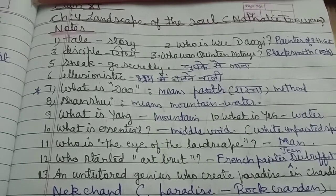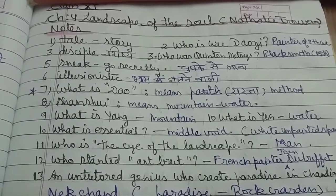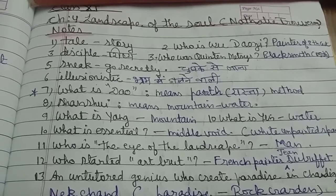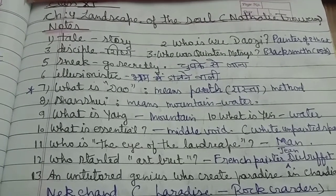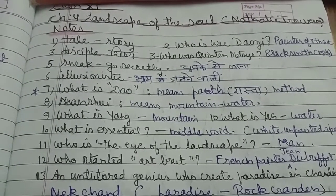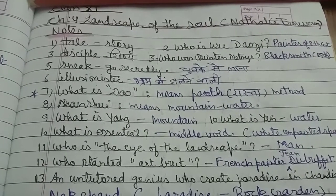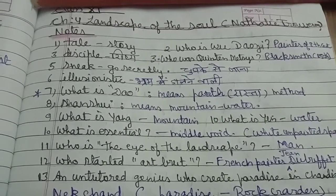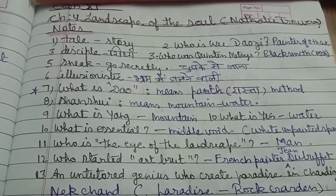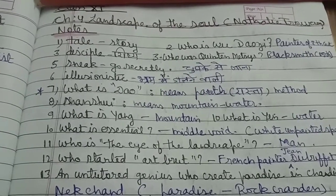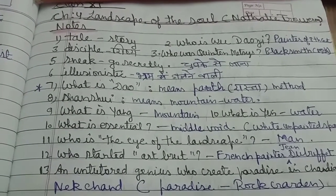Illusionistic means bhram mein daal wali. What is dao? Dao means path or method — raastha ya tariqa.